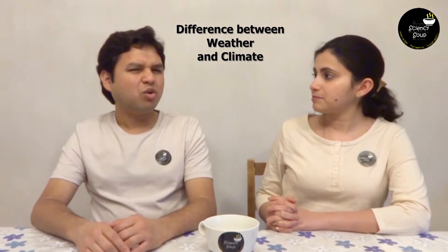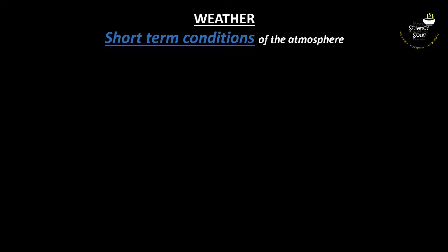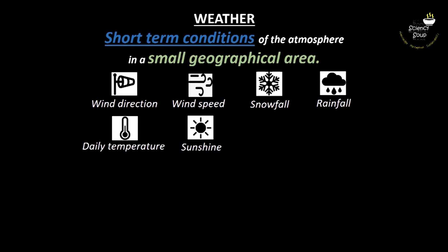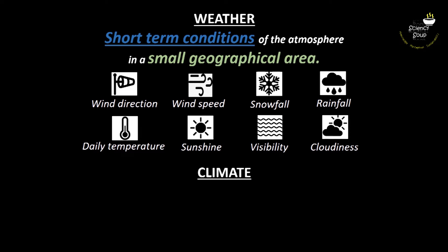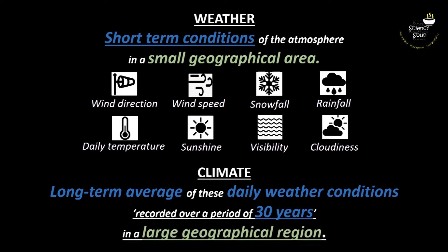Before going into the questions, it's very important that we understand the difference between weather and climate. Weather refers to short-term conditions of the atmosphere over a small geographical area, which include wind direction and speed, snowfall, rain, daily temperature, sunshine, visibility, cloudiness, and much more. Whereas climate is a long-term average of these daily weather conditions recorded over a period of 30 years in a large geographical area.